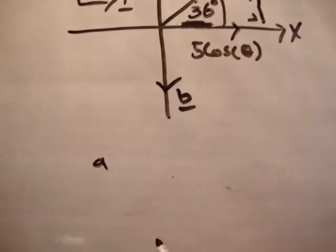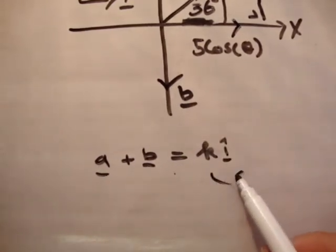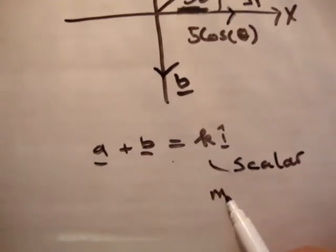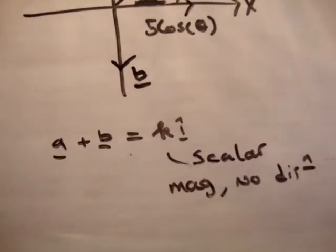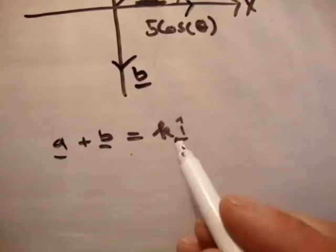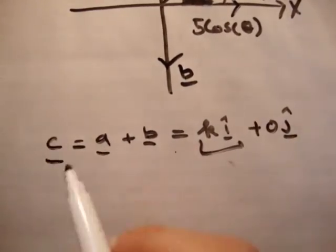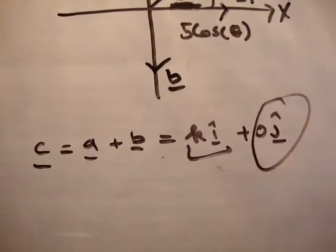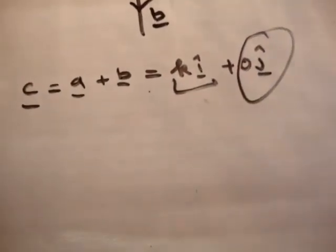We're given that a plus b equals k i-hat. Remember, k here is a scalar. It has magnitude but no direction. That's why it's different from a vector, because a vector has magnitude and direction. If we look at this, it's k i-hat plus 0 j-hat. So the vector a plus b, which we'll say equals vector c, does not live in the y-axis at all. It must live only in the x-axis, somewhere along here.